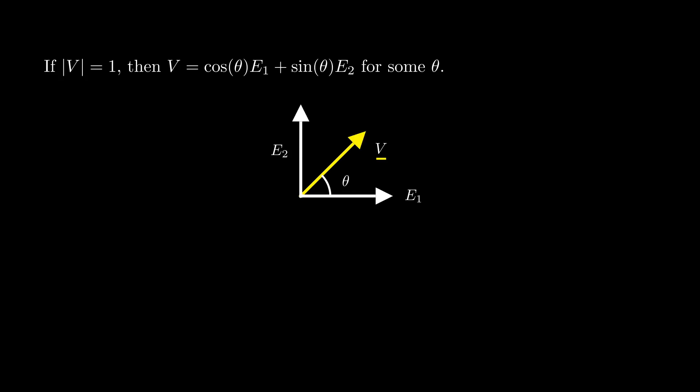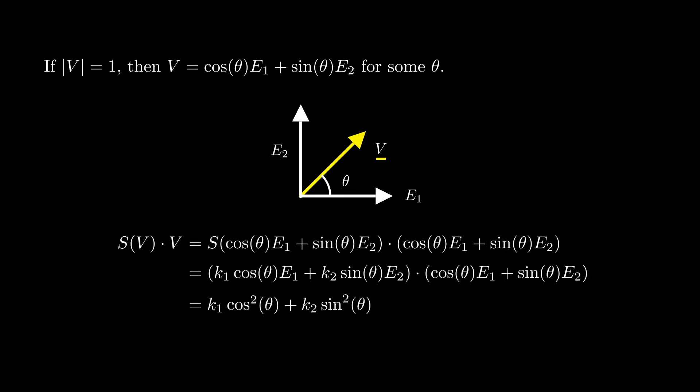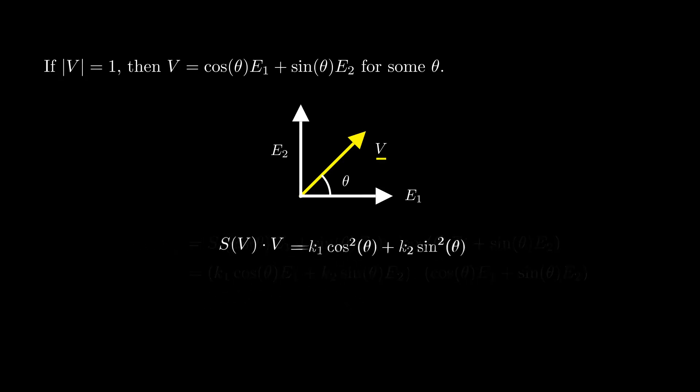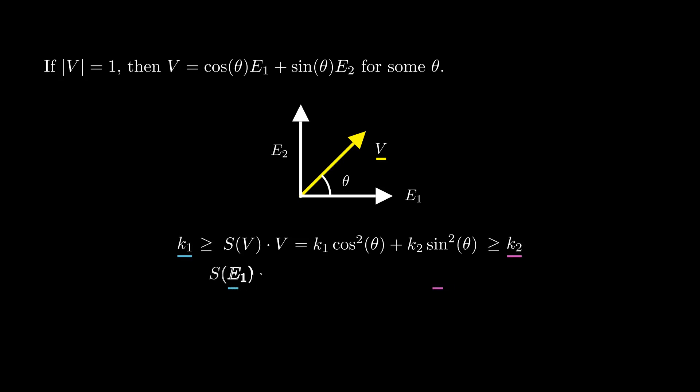Now back to algebra. We can write a unit vector v as cos(theta)·e1 plus sin(theta)·e2, where theta is the angle from e1 to v. Then S(v)·v equals k1·cos²(theta) plus k2·sin²(theta), since e1 and e2 form an orthonormal basis. This expression is less than or equal to k1 and greater than or equal to k2, with equality on the left only when sin(theta) is zero, meaning v is ±e1, and equality on the right only when v is ±e2.